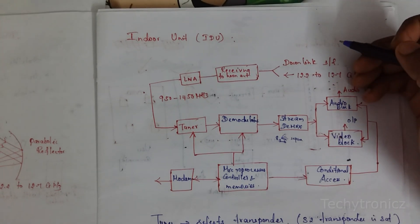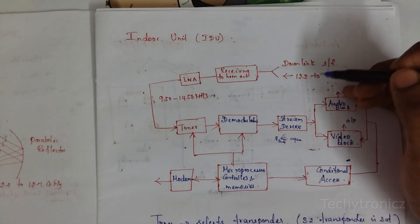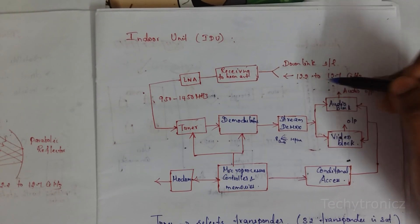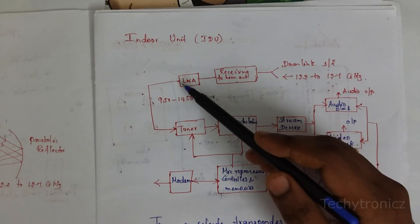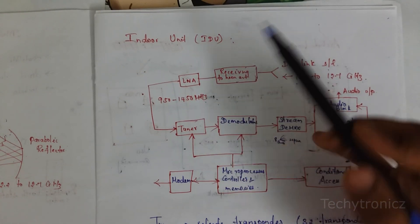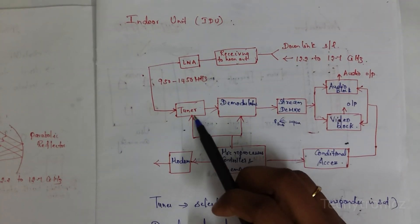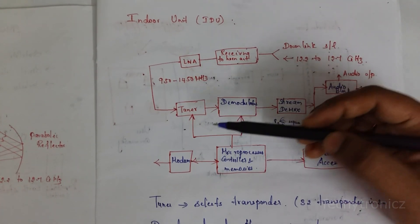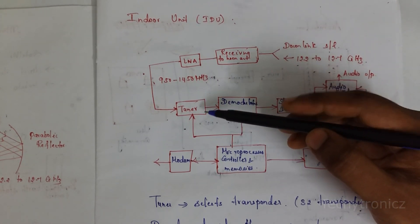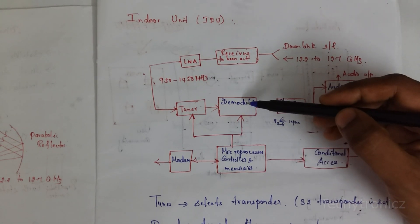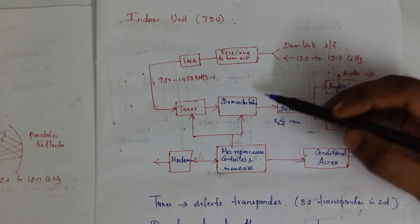For the indoor unit, the downlink signal from the satellite arrives at 12.2 to 12.7 GHz, passes through the horn antenna and low noise amplifier, then the down converter brings it to 950–1450 MHz. The signal is then passed to the tuner, which selects from 32 transponders in the satellite, choosing which transponder to use. The signal is then passed to the demodulator, which demodulates the carrier signal.